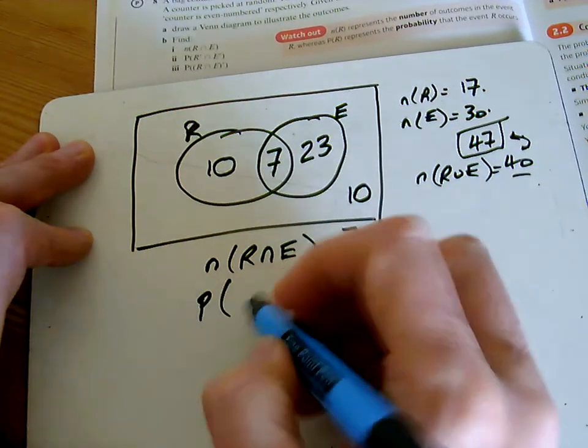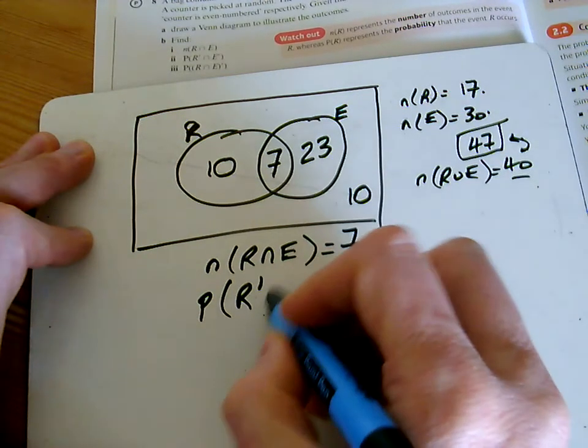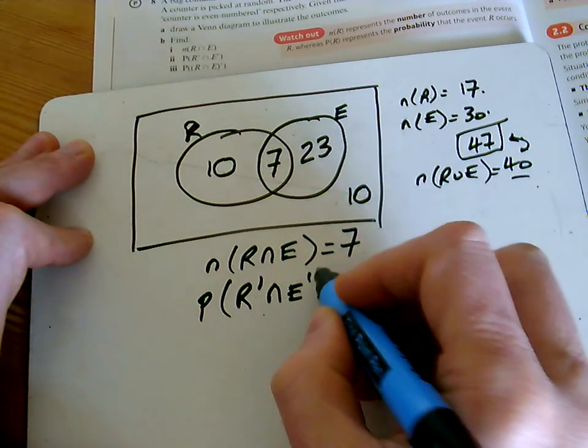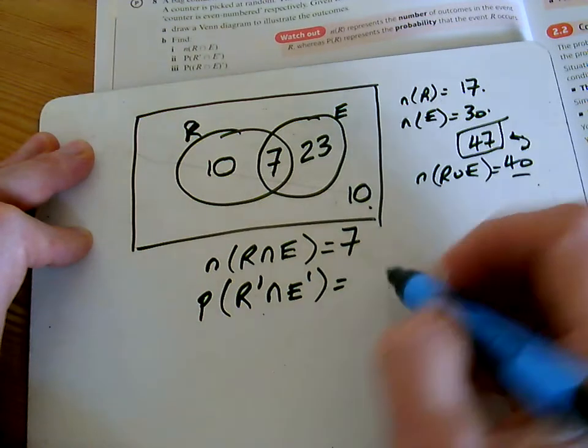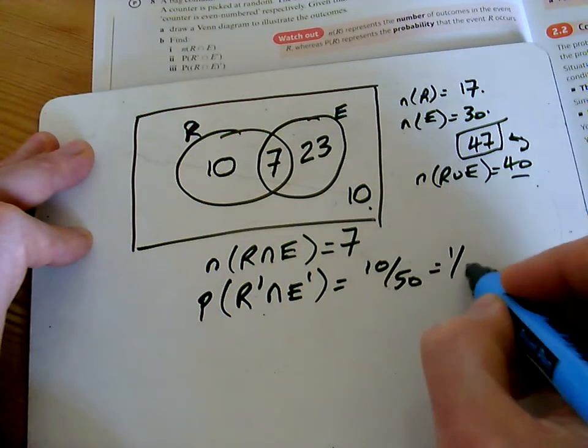Then it asks for the probability this time of what's not in R intersection with what's not in E. So what's not in both of them? That's those 10. 10 out of 50, or one-fifth.